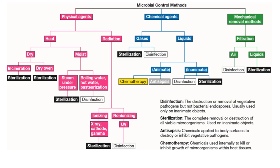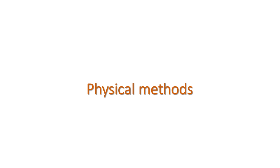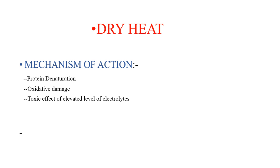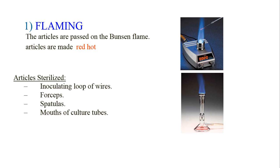We will start with physical methods, beginning with dry heat. The mechanism of dry heat involves protein denaturation, oxidative damage, and a toxic effect from limited levels of electrolytes inside the cell — all of which result in the destruction of the cell.